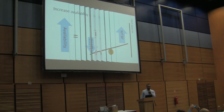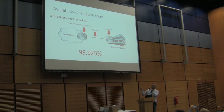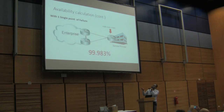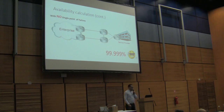For example, let's think about a topology where the average availability is 99.925%. With a little improvement, if we got two different links from an upstream provider, we can achieve 99.983% availability. With more improvement on our network side, we can achieve even higher availability. This is a realistic case that can happen.